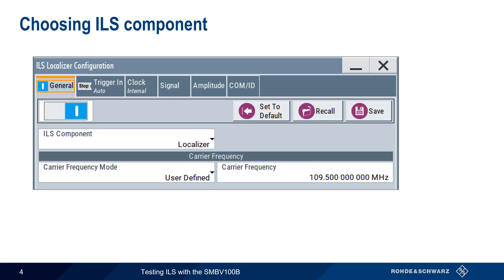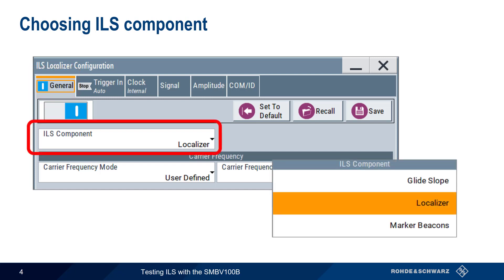Configuration for all three ILS components is found under the ILS tab. In the General tab, you can select the ILS component you wish to generate – glide slope, localizer, or marker beacon. Remember that the SMBV generates only one of these signals at a time. When you're finished configuring the ILS signal parameters, don't forget to enable modulation as well.